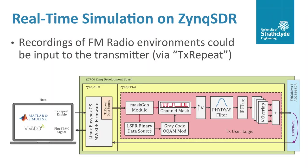Back in the lab, the FM environment recordings were input in turn to the Zynq SDR. When the transmitter was enabled it scanned the input FM spectrum, reconfigured its channel mask to suit, and began outputting its secondary user FBMC signal with spectral holes — all in the space of 0.33 seconds.